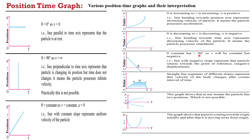When θ is constant but greater than 90°, velocity is constant but negative — a line with negative slope represents the particle returning towards the point of reference. Straight line segments of different slopes represent that the velocity of the body changes after certain intervals of time. A graph showing a particle having two positions at one instant is not possible — practically it is impossible for a particle to have two positions at the same time.